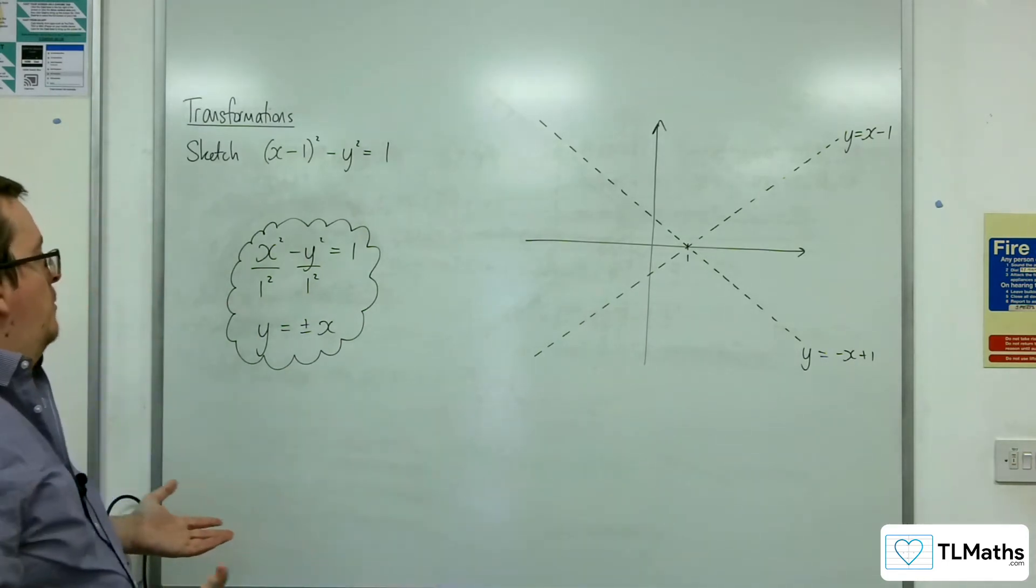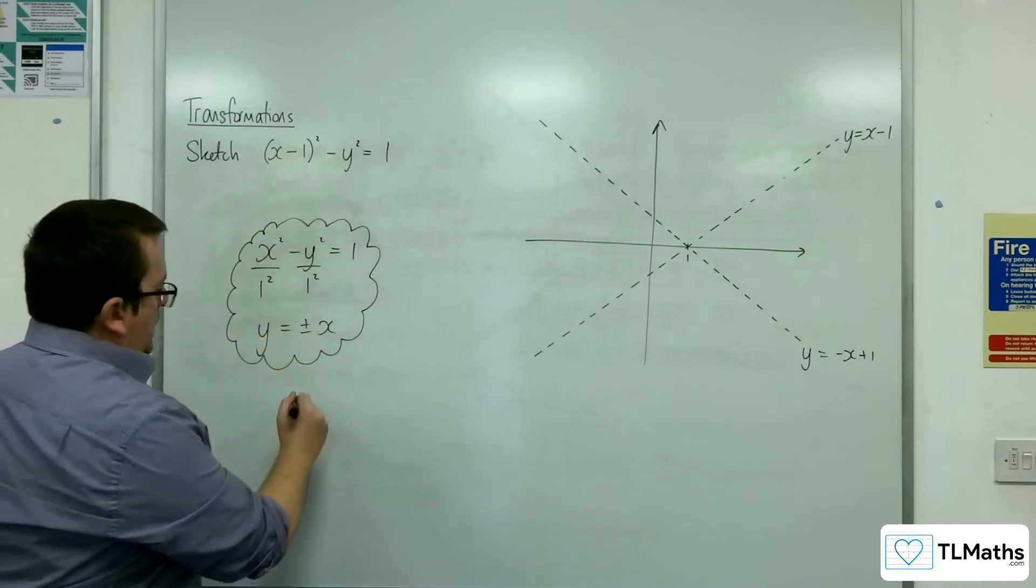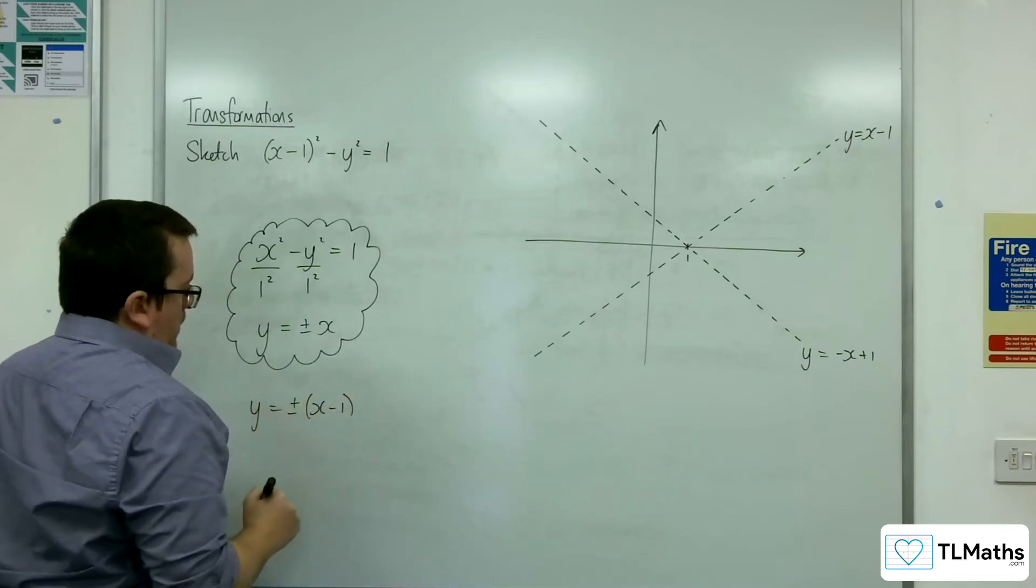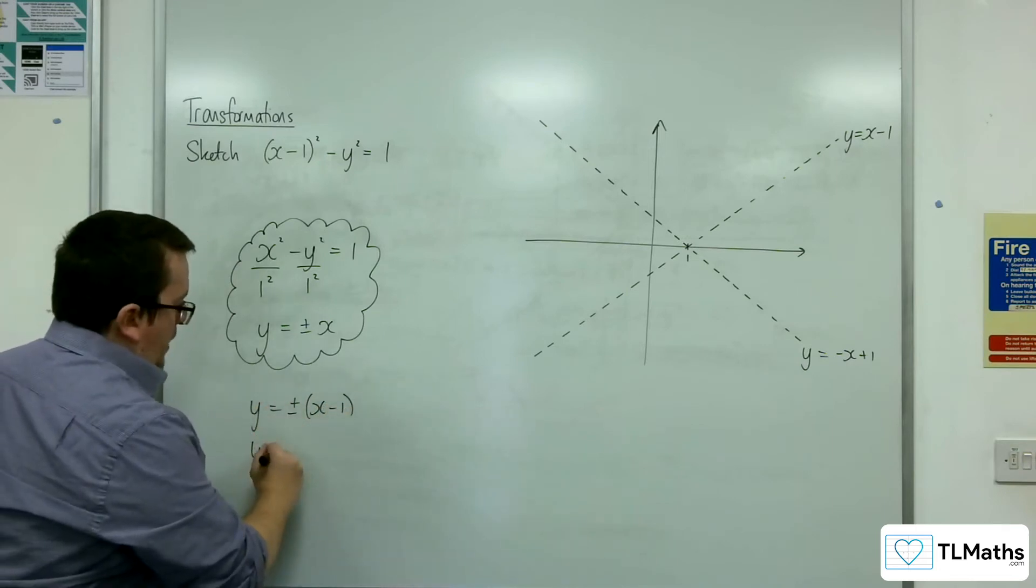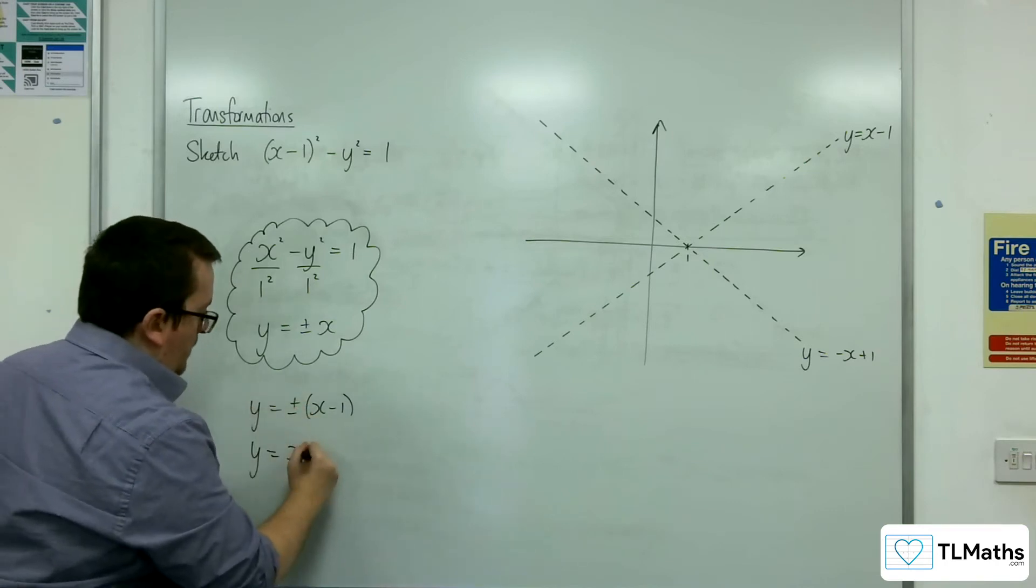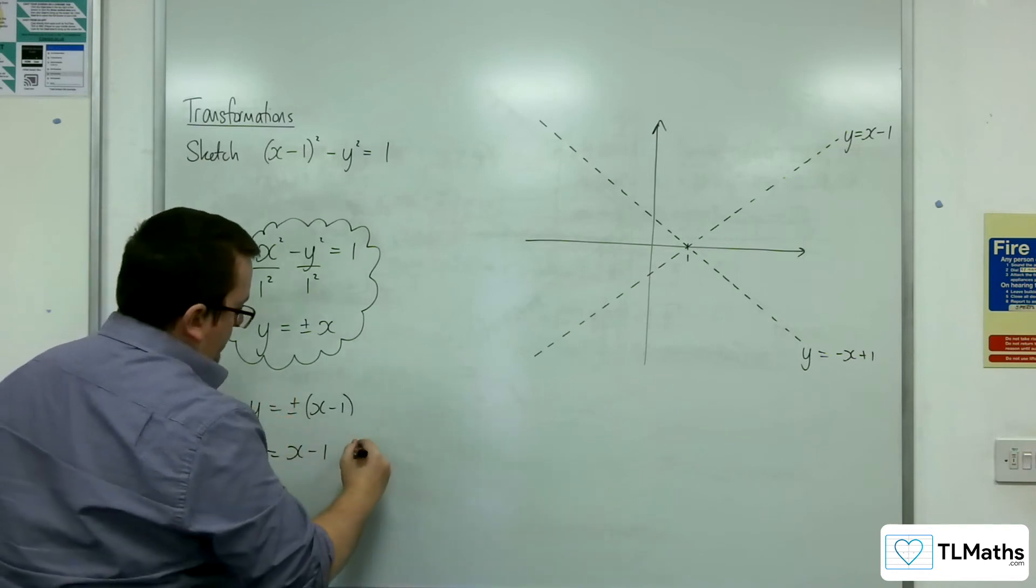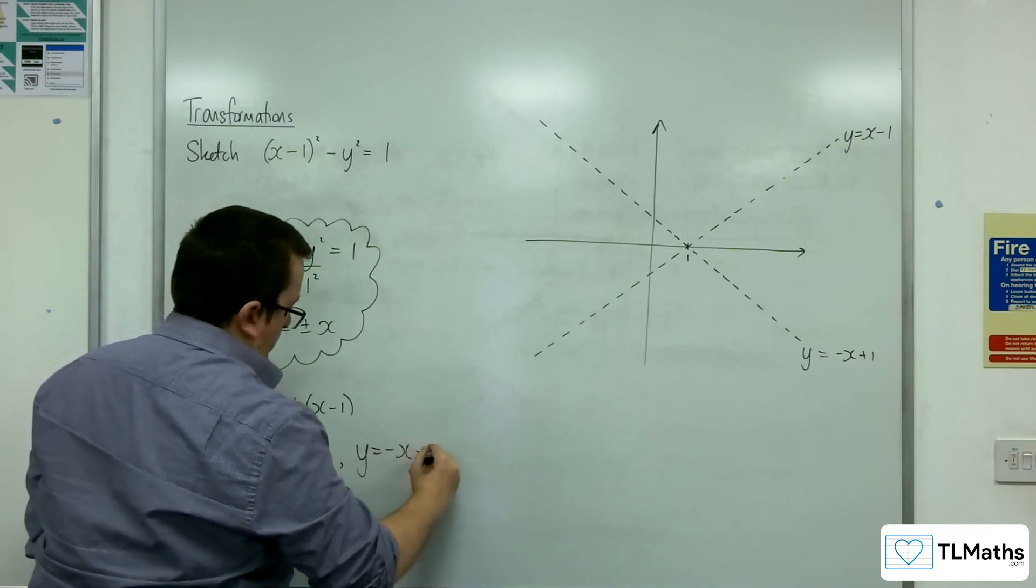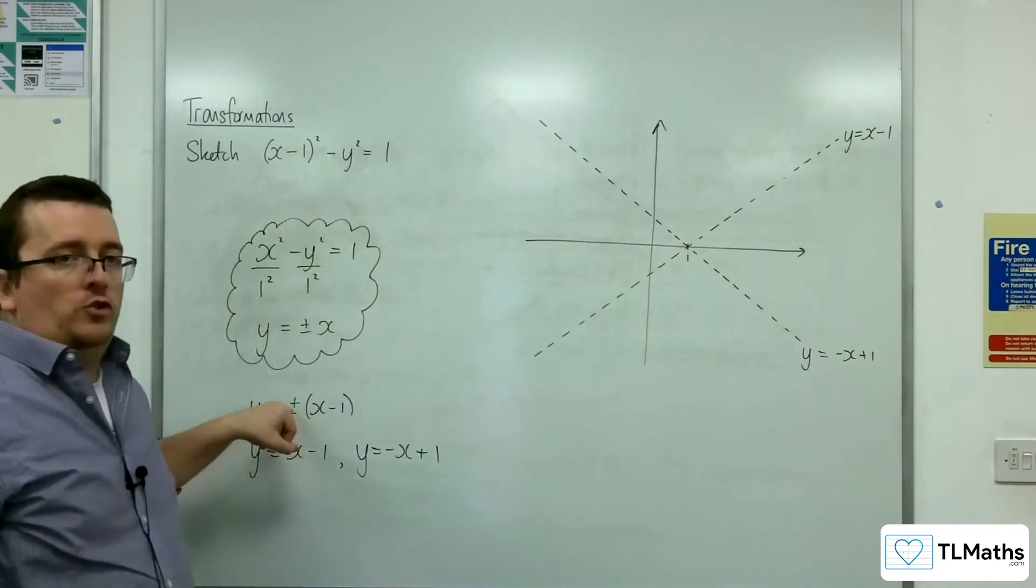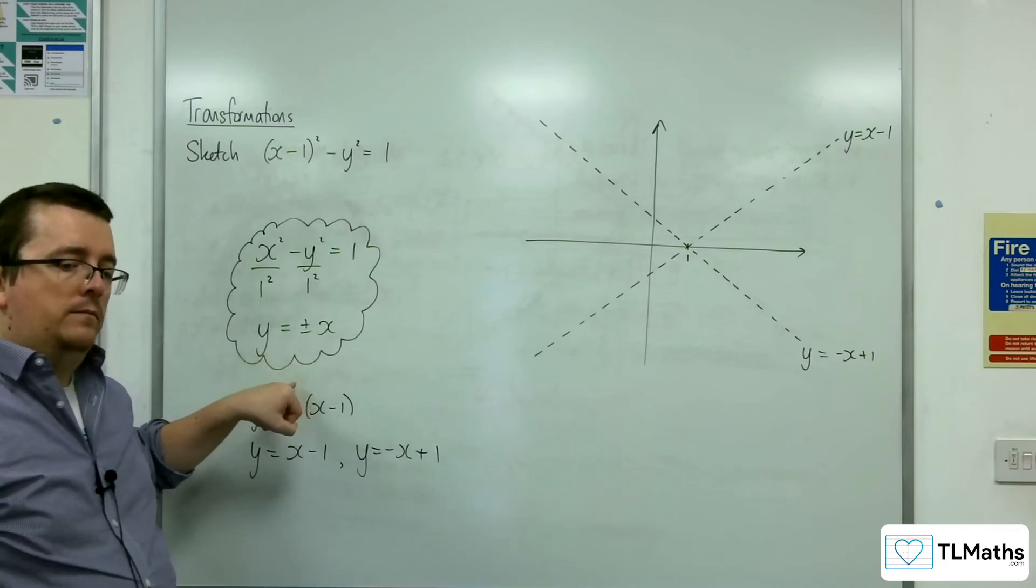Now, that's also from the form of, if you replace the x with x minus 1 in there, plus or minus x minus 1, you get y equals, if it's plus, you get x take away 1, and if it's minus, you get minus x plus 1. So if you're wondering how you could do that generally, just perform the transformation to the equations of the asymptotes as well.